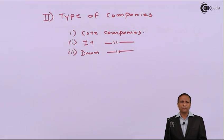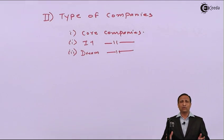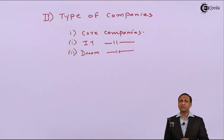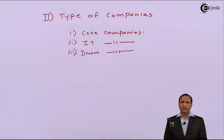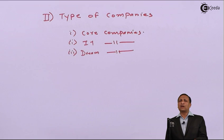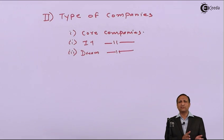The benefit of dream company status is that the dream company gets the privilege to visit the college on Day 1, meaning they get all the cream students. Additionally, most colleges have a policy that once a student is recruited by a company, they cannot sit for the next company. However, an exception is made for dream companies — if a student is already recruited by another company and the dream company visits campus, that student is still allowed to appear for the dream company.